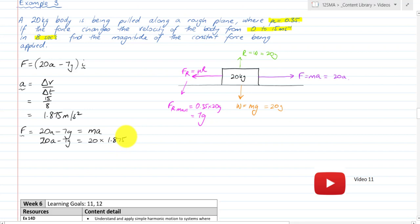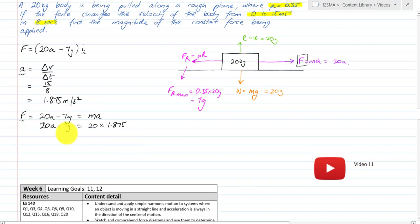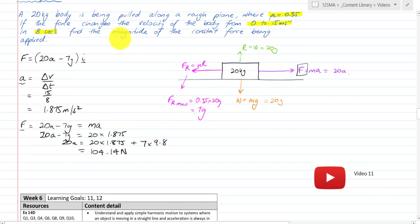We can now do that calculation to work out the overall force being provided. This purple force, our MA, and the acceleration that force provides, works against the frictional force. So 20A equals 20 times 1.875 plus 7 times the gravitational constant 9.8, which equals 104.14 newtons. Therefore, the magnitude of the constant force being applied is 104.14 newtons.